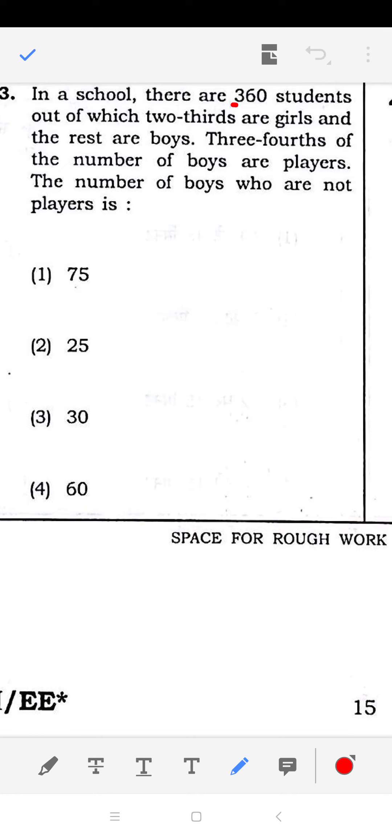In a school, there are 360 students out of which two-thirds are girls and the rest are boys. First, let's find the number of girls. The total number of students is 360.